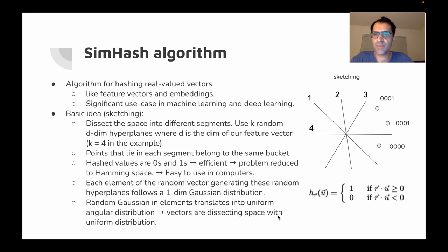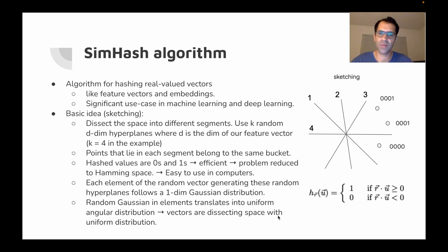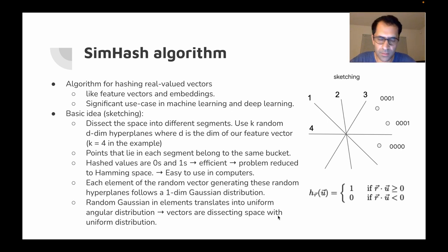The SimHash algorithm is applied on real-valued vectors, which are very common as feature vectors in machine learning models or embeddings from word embedding, graph embedding, and similar applications. Many times we want to compare these embeddings — for instance, finding shoes with similar feature vectors on an Amazon-like website. The basic idea behind SimHash is sketching.